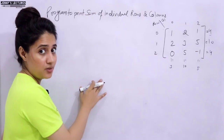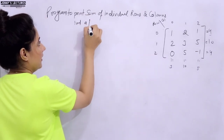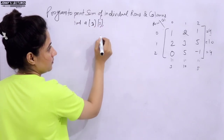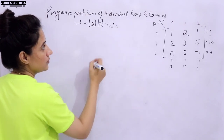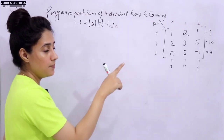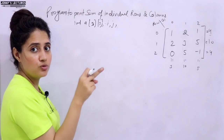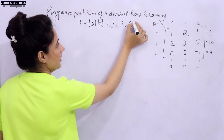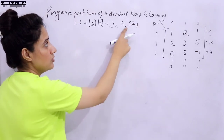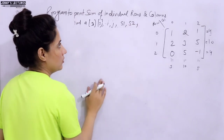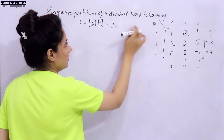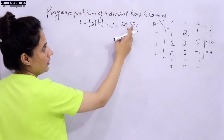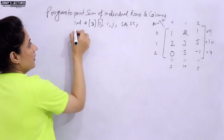First, we declare a 3x3 matrix and loop variables i and j, as well as two variables for sum — one for rows and one for columns. I'm taking SR for sum of rows and SC for sum of columns.